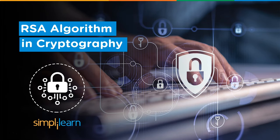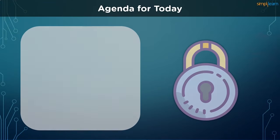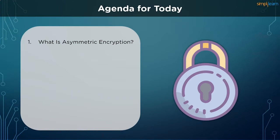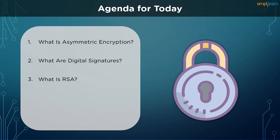Let us take a look at the topics to be covered today. We first get a recap on what asymmetric encryption is and how it differs from symmetric encryption. We learn what digital signatures are and how they are used in today's world. We understand how the RSA system works and how it can be used to encrypt and decrypt general data apart from digital signatures. Finally, we learn about the advantages RSA provides when it comes to managing signatures and encrypting information in a professional environment.